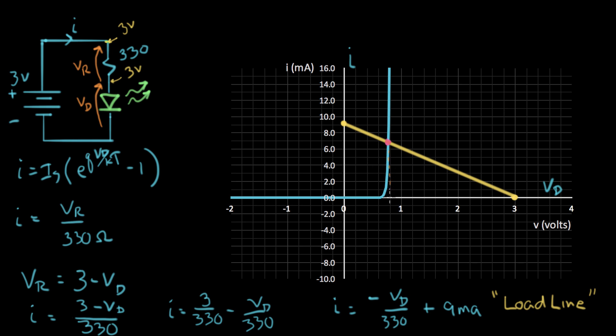Right there is about 0.7 volts. And the current over here, if I read off the current, just straight across there, it's about 6.8 milliamps of current.